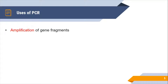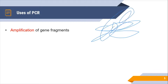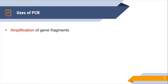The first use is amplification of gene fragments. As discussed in the previous lecture, PCR is actually an amplification technique, so we can amplify any gene fragment. Suppose this is the DNA and we want to amplify a specific fragment — we can easily amplify that fragment from the total DNA by using the PCR technique.